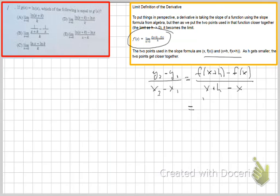And so when you simplify the bottom, you end up with f of x plus h minus f of x all over h, because the two x's will cancel. And this is the expression that we have in our limit definition of the derivative.